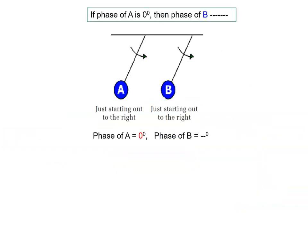Agar A ka phase 0 hai to of course B ka bhi 0 hooga. Jo A ki position hai, wohi B ki position hai. Dono hi extreme se release kar rahe ho.